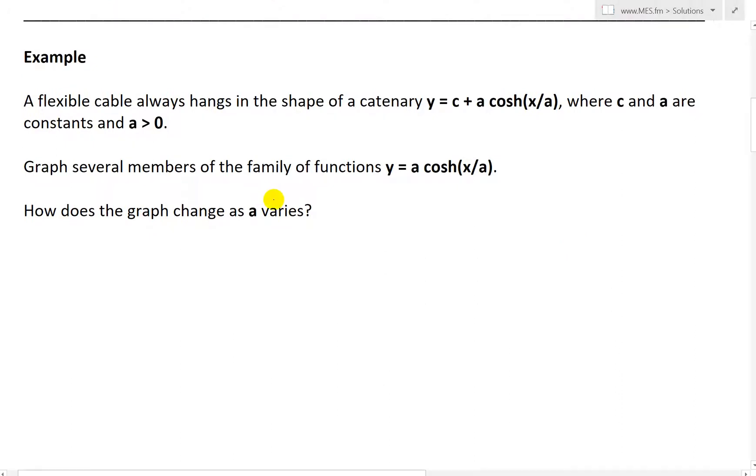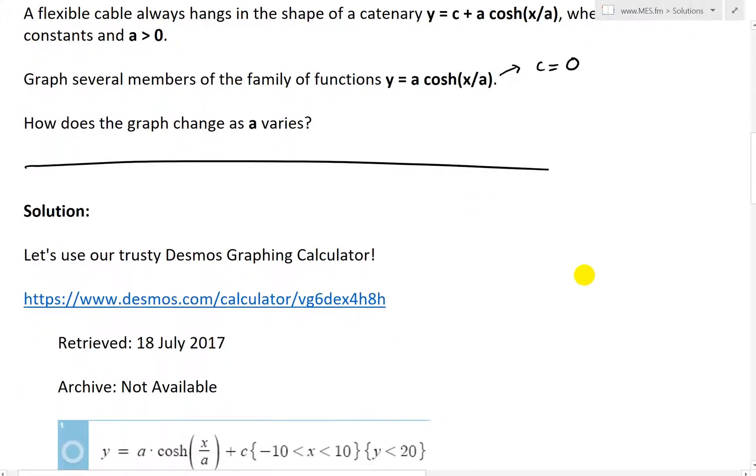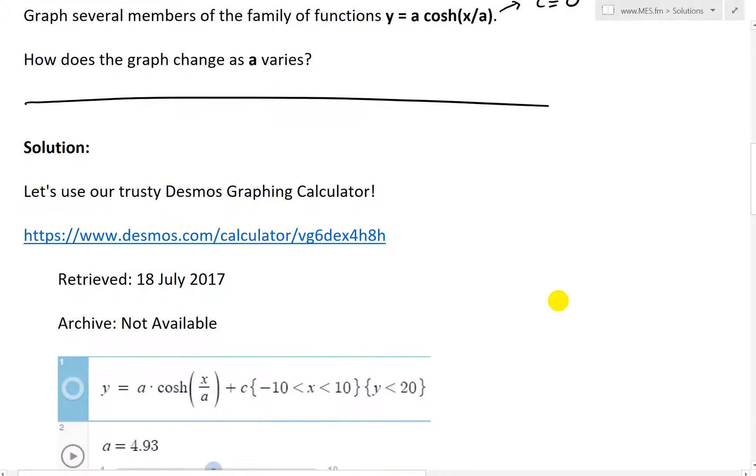Graph several members of the family of functions y equals a cosh(x/a), and here the only difference is they've made c equal to 0. And then we're asked, how does the graph change as a varies? Well, let's just jump right into the solution here.